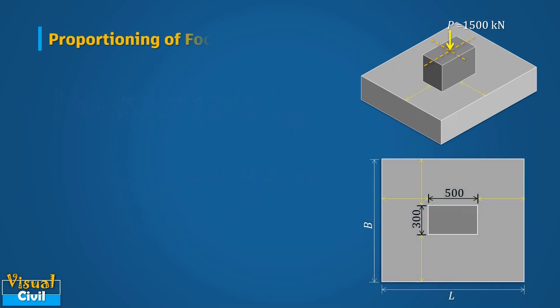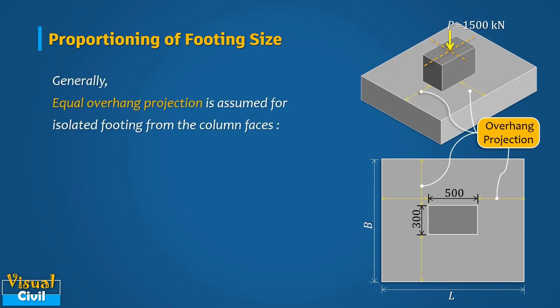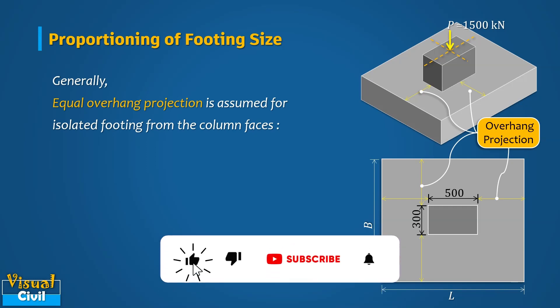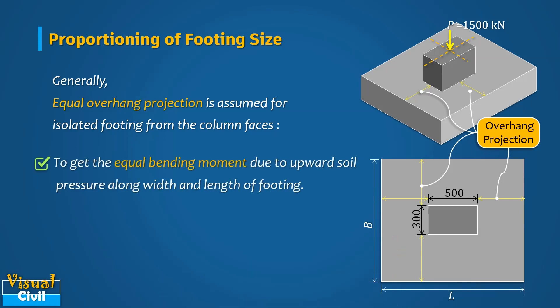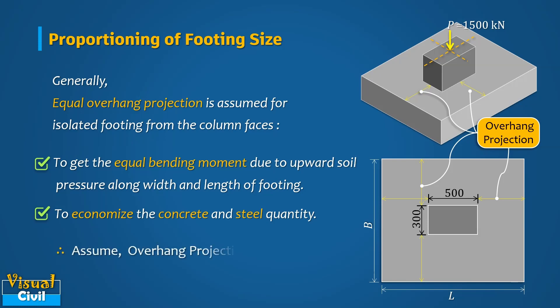Now let us decide the length and width of the footing by doing proper proportioning. We assume an equal overhang projection of the footing from the column faces. With this, we get equal bending moment along the width and length of the footing due to upward soil pressure, which in turn economizes the required concrete and steel quantity. Let us assume the overhang projection of the footing equal to x.